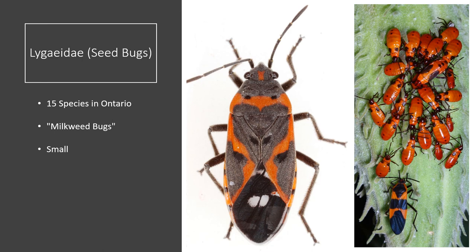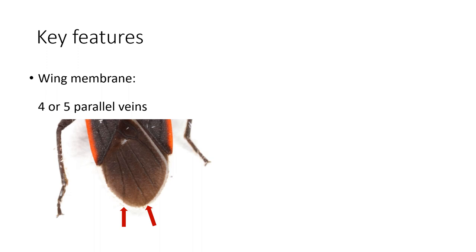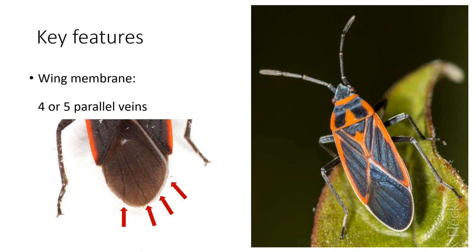Our last bug of this workshop is Lygaeidae — seed bugs. There are 15 species in Ontario and these are known as milkweed bugs. They are small. Key features: they have a wing membrane with four or five parallel veins. That's all for workshop number four, Hemiptera. Thank you all for listening — hope you have a great day!